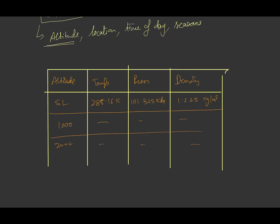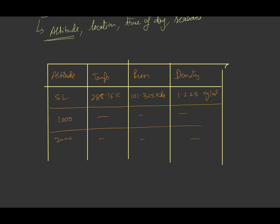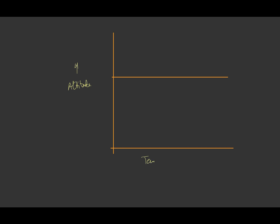So this is what standard atmosphere is. They have not just drawn these charts — they have also found out the mathematical relationship of all these values with respect to altitude. If we plot the variation of temperature with respect to altitude, up to 11 kilometers, the temperature decreases linearly.